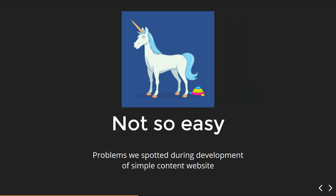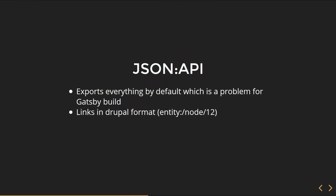Here is a list of problems we spotted when we developed a website with Gatsby and Drupal. First of all, JSON API by default exports everything, which is a big problem for the Gatsby build. It's a lot of data which you definitely don't need. For example, rich text formats — you don't need rich text formats in your content application. And the second problem is that links are exported in Drupal format, which is also not what Gatsby expects.